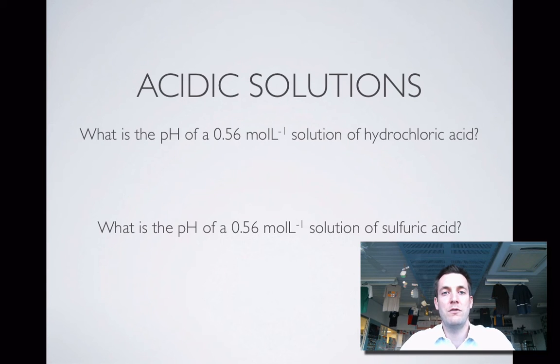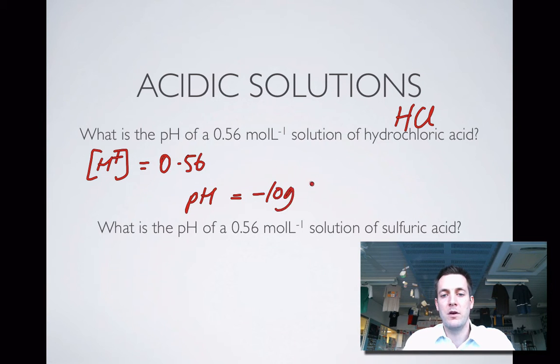So let's start off with some acidic ones where we're calculating the pH from the concentration. In this first example we've got a strong monoprotic acid, so one H+ ion for every HCl. The concentration of H+ will be the same as the concentration of the acid, so that's 0.56, and the pH will be minus log of 0.56, and that equals 0.252. A nice simple one to start with.